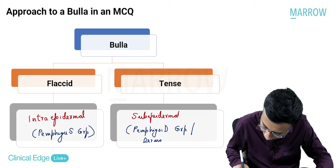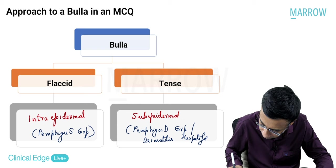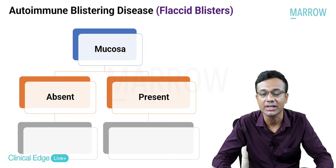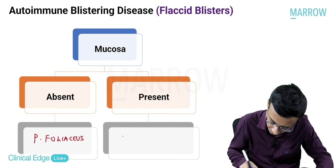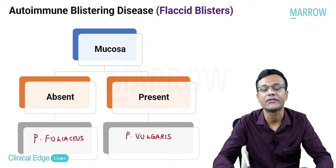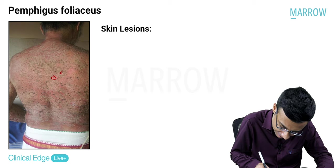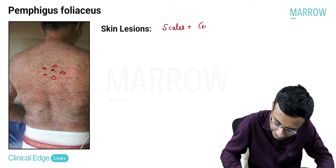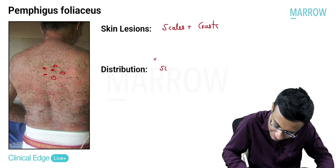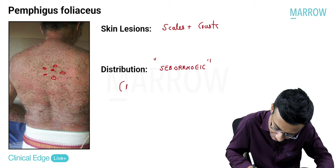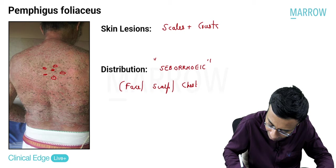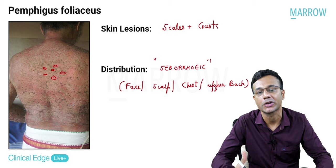When a flaccid blister is seen in an autoimmune blistering disorder, if mucosa is spared, think of pemphigus foliaceous. If there is mucosal involvement, make a diagnosis of pemphigus vulgaris. In pemphigus foliaceous, you can see scales and crusts. The distribution is seborrheic - areas rich in sebaceous glands like the face, scalp, chest, and upper back. The level of the blister is just below the stratum corneum - subcorneal bulla.